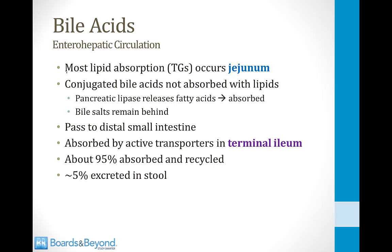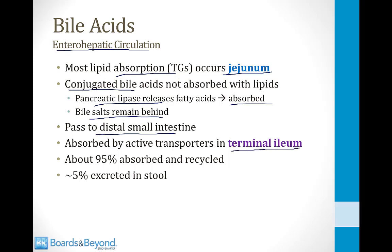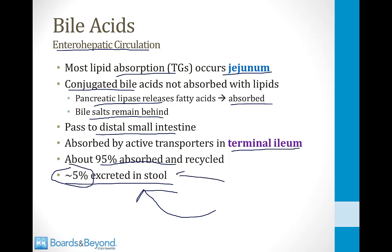Now let's talk about what happens to bile acids and bile salts once they reach the intestines — they do not all pass out with the stool; some are reabsorbed in a process called the enterohepatic circulation. Most lipid absorption of triglycerides occurs in the jejunum, but conjugated bile acids are not absorbed with the lipids. Pancreatic lipase releases the fatty acids, which get absorbed by enterocytes, but the bile salts remain behind. They then pass to the distal small intestine and are absorbed by active transporters in the terminal ileum. About 95% are absorbed and recycled, and about 5% are excreted in the stool — and this 5% represents a major way by which cholesterol is excreted from the body.